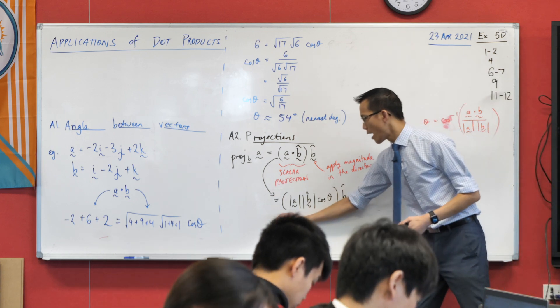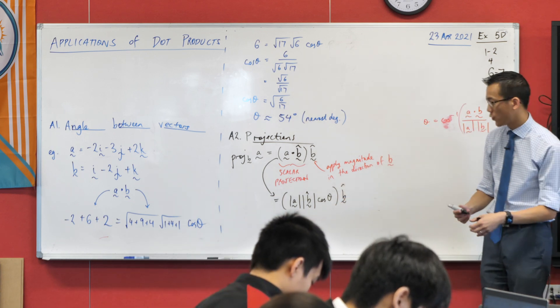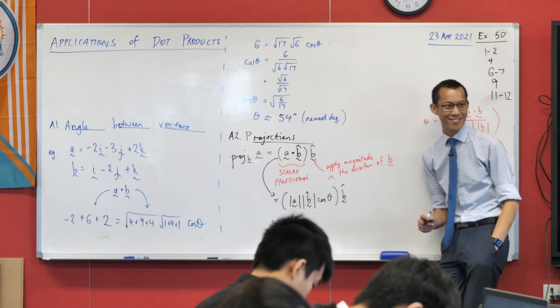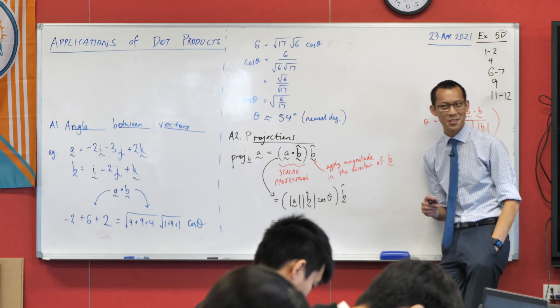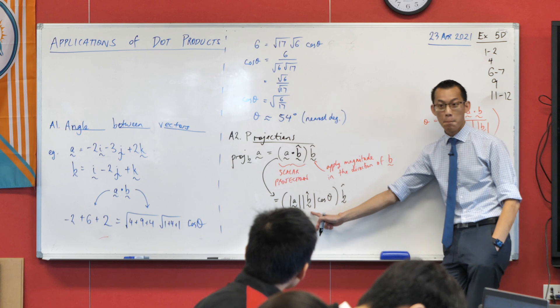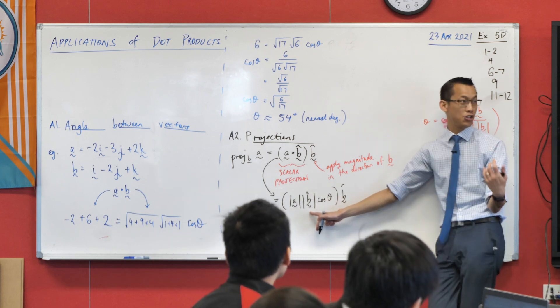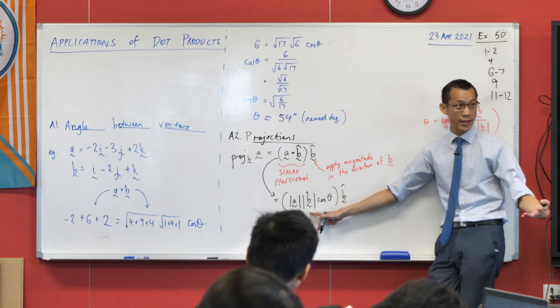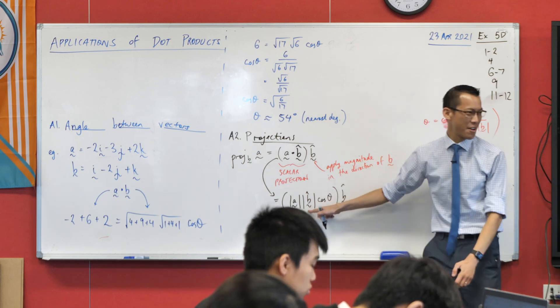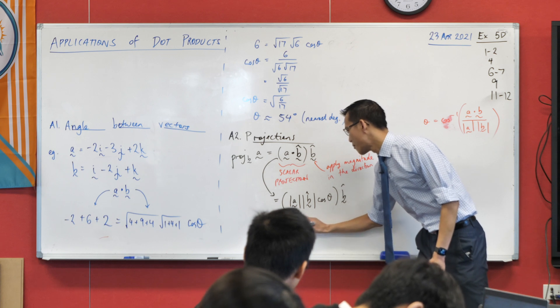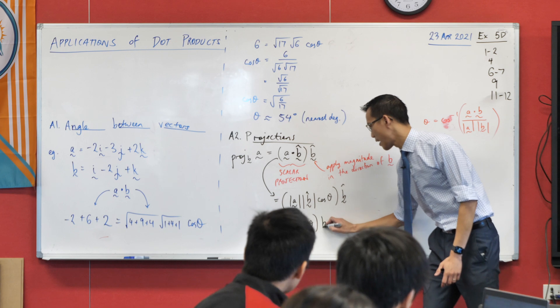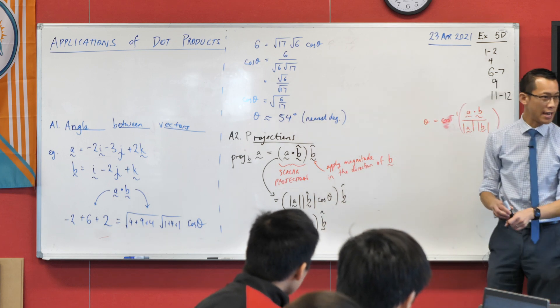Now, the reason why this can give us something useful is because there's a part of this line here that is very easy to evaluate. Which is the part that's easy to evaluate? It's the magnitude of B hat, because by definition, it's a unit vector, the magnitude of a unit vector is one. So what I can get is magnitude of A, cos theta, and then B hat's still hanging out the end here.